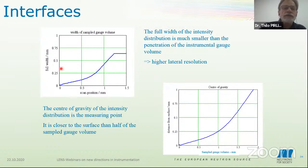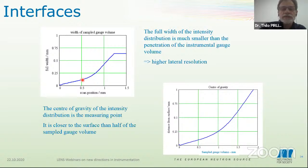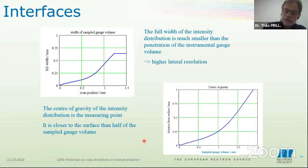The full width at maximum of the sampled gauge volume: when you enter the gauge volume into the sample, although the gauge volume is larger, the sampled gauge volume compared to the full gauge volume is much smaller, which provides this resolution. For calculations, we say the center of gravity of this intensity distribution in the sampled gauge volume is the measuring point. If you enter your large gauge volume one millimeter, your center of gravity is at 0.25 millimeters — so you are very sensitive to near-surface stresses.